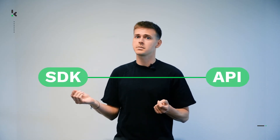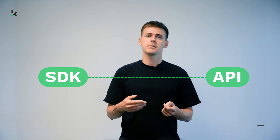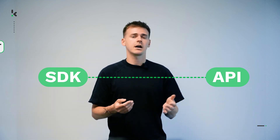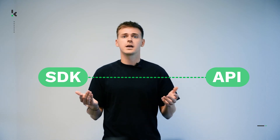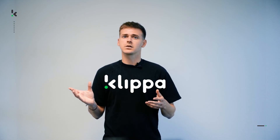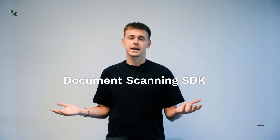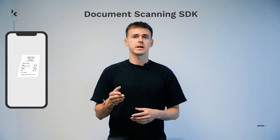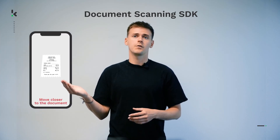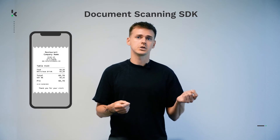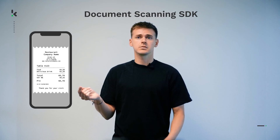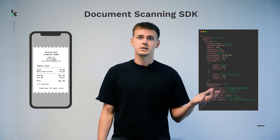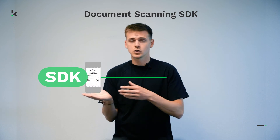In some cases, SDKs are designed to work together with an API. While not an obligation, this can make your life a lot easier by having an SDK to optimize input for a specific API you want to use. At Clipper, we offer multiple SDKs. For example, the Document Scanning SDK, which supports your users to make the best possible picture of a document by giving feedback and optimizing the image directly within your app. If, after taking a perfect picture, data extraction is required, the image can then be sent from the SDK to the API.